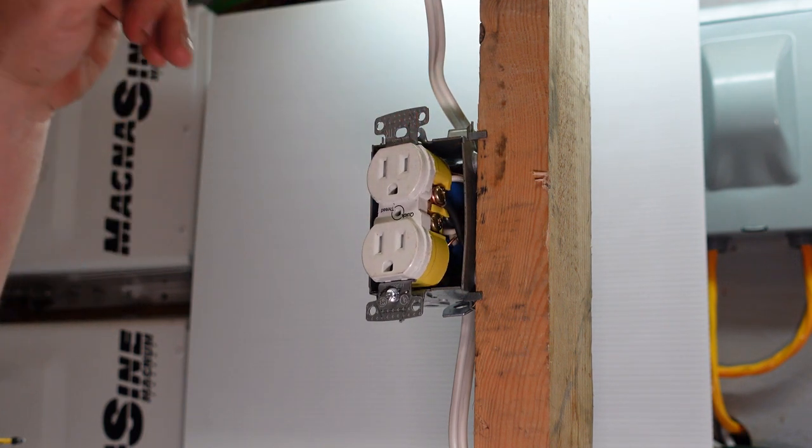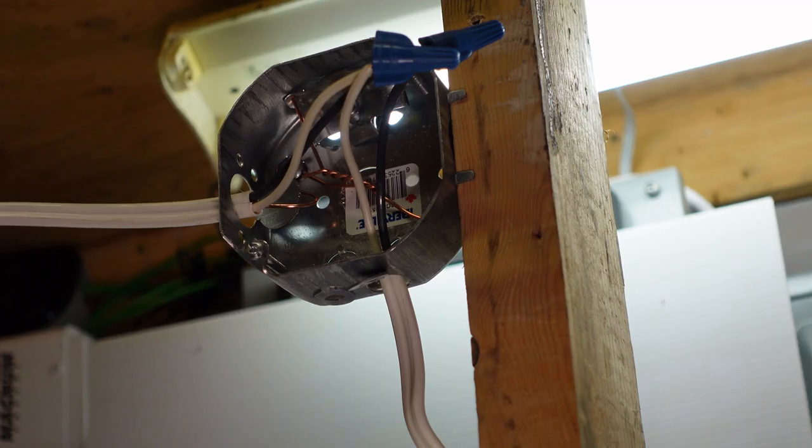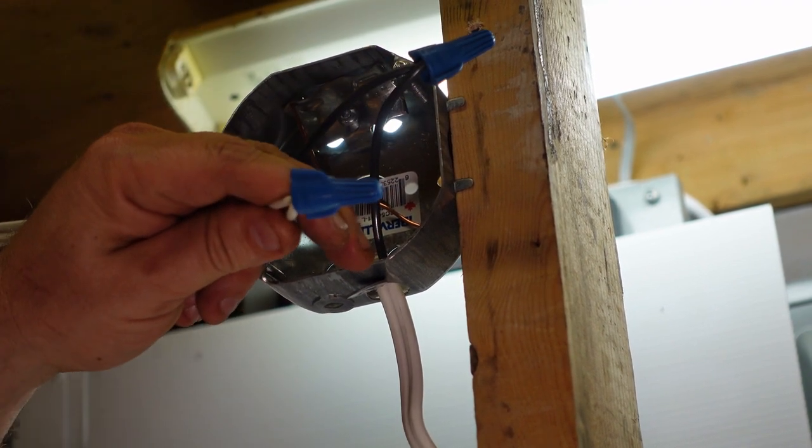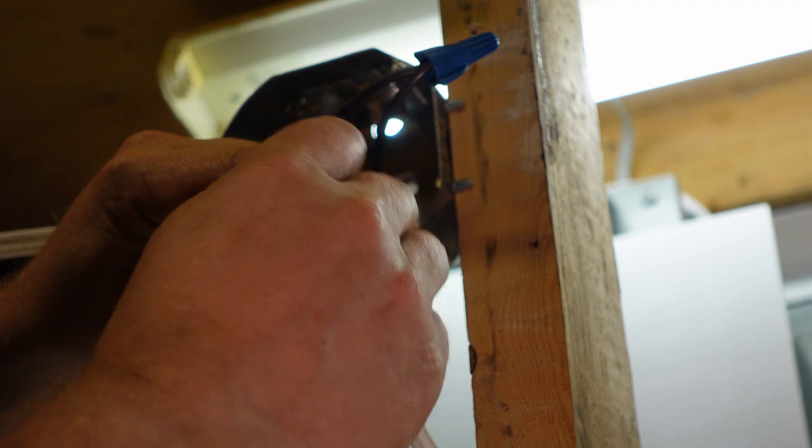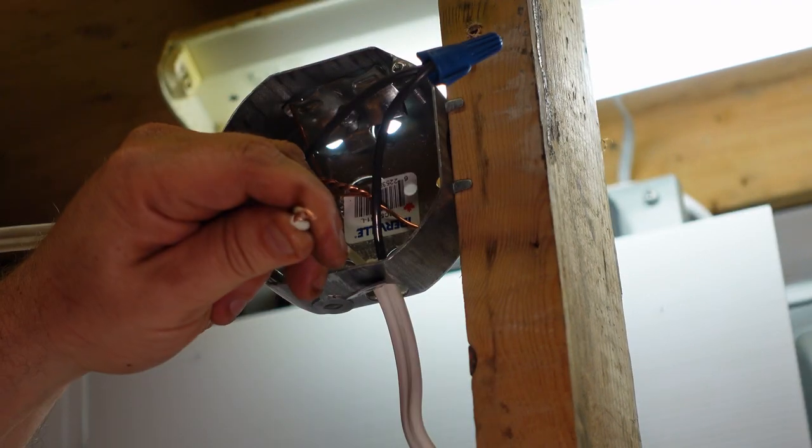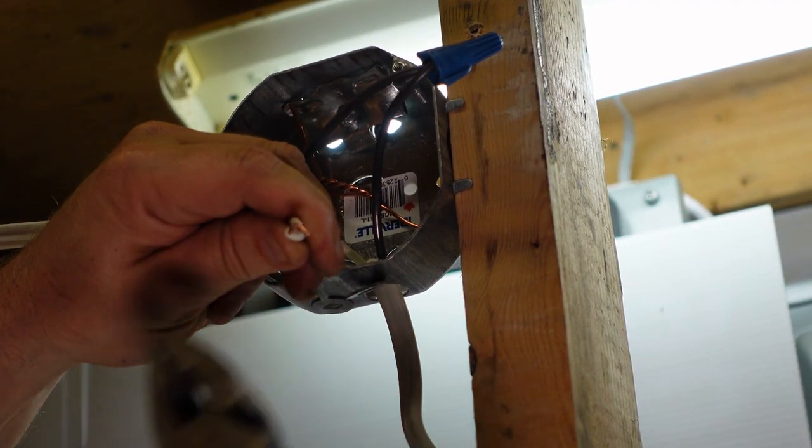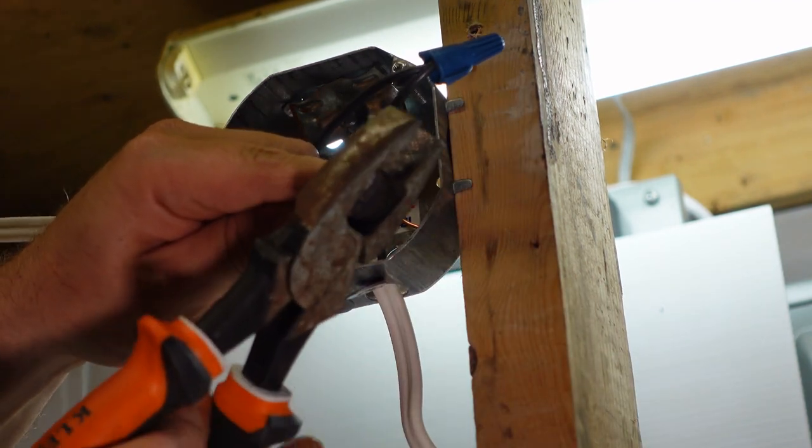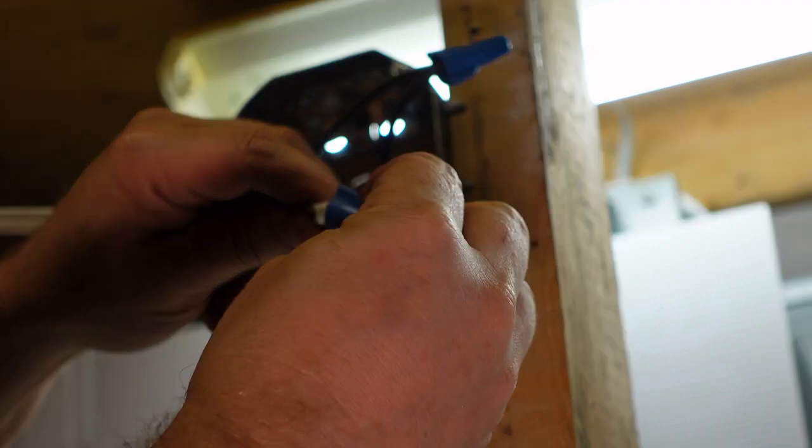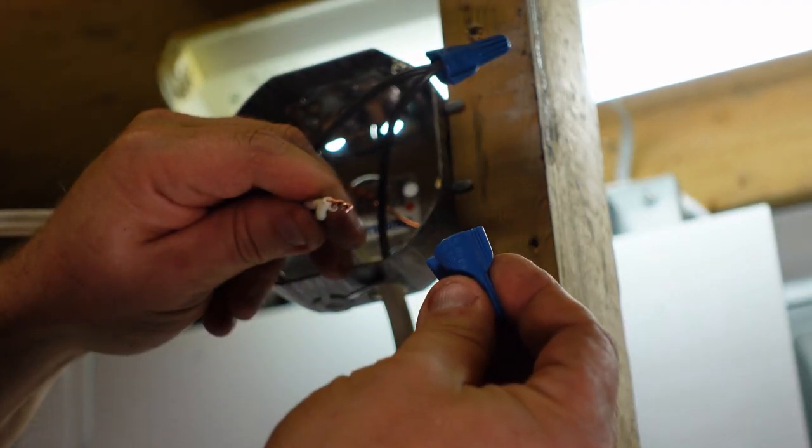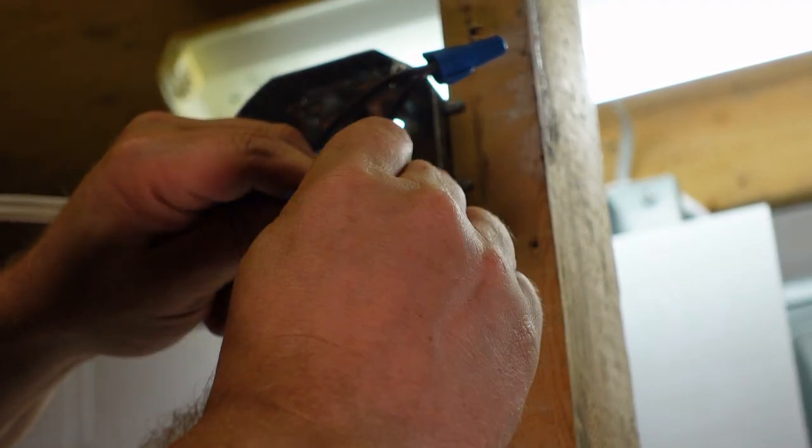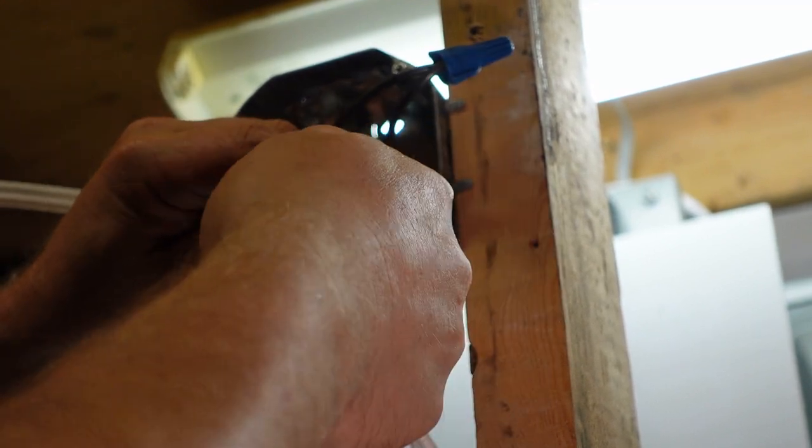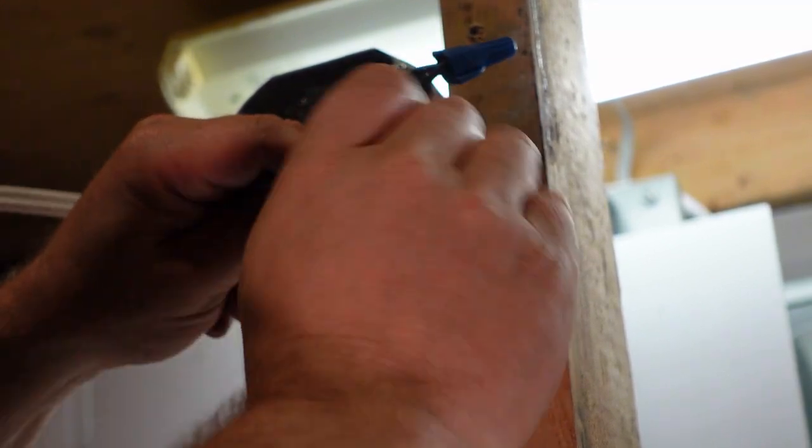Now I'll focus in on the octagon box. The white wire that was too long, we're simply going to remove the Marit, give a couple extra twists, cut the wire shorter on an angle, which helps make the Marit bite better, and then we're gonna put the Marit back on so that we don't see any bare conductors showing.